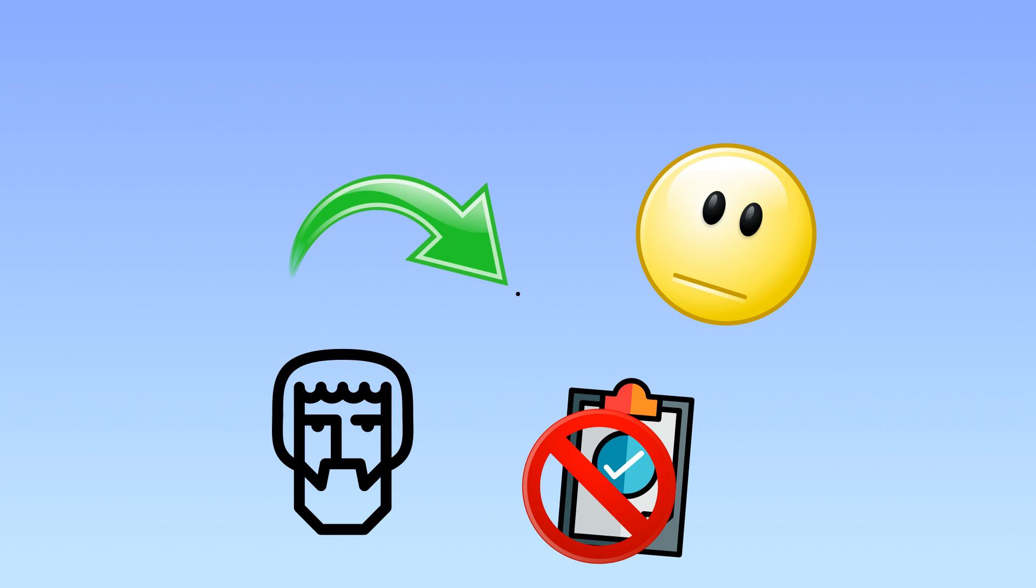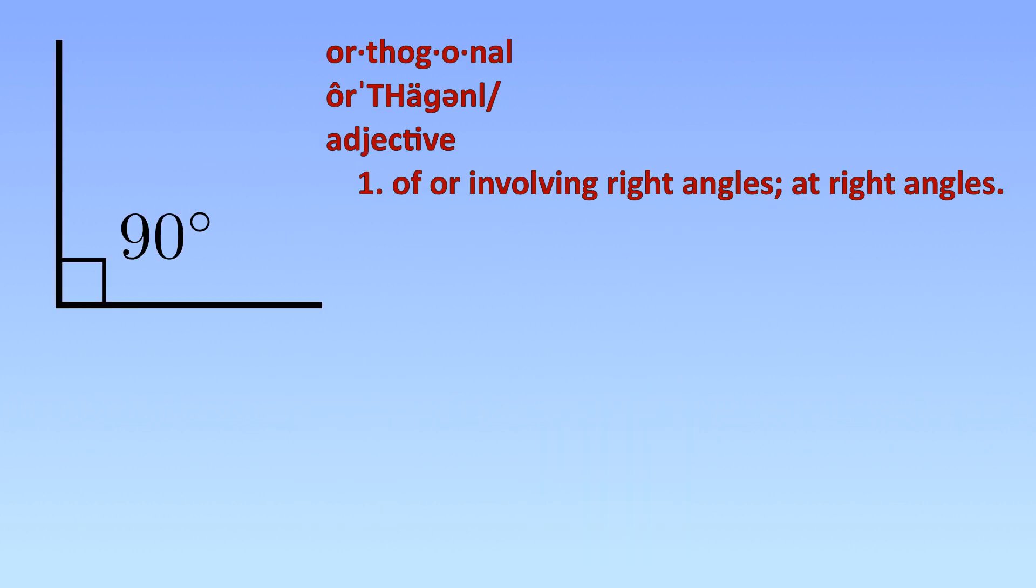Now we will introduce the concept of orthogonality. Orthogonal is just a fancy word that means perpendicular or 90 degrees to. When you want to add a dimension, you just put it perpendicular to the last.